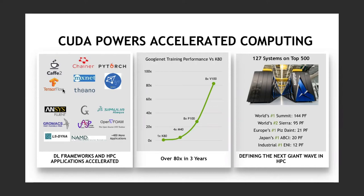GPU-accelerated computing is everywhere. The world's number one and number two supercomputers are GPU-accelerated using NVIDIA GPUs — 100-petaflop systems here at DOE. Most of the other major leading systems in the world are GPU-accelerated, and a large fraction of the Top 500 has acceleration in some way. In particular, a very large fraction of new systems on the Top 500 are GPU-accelerated.